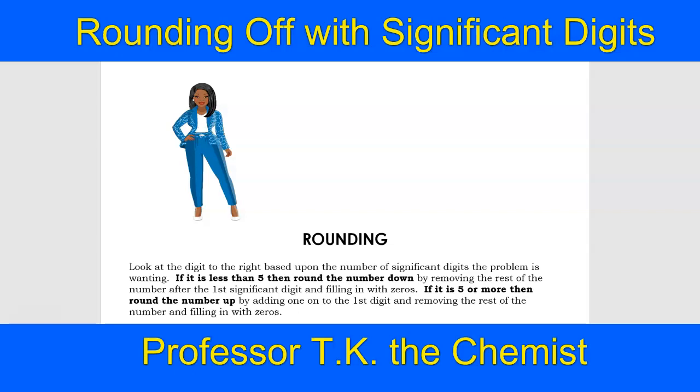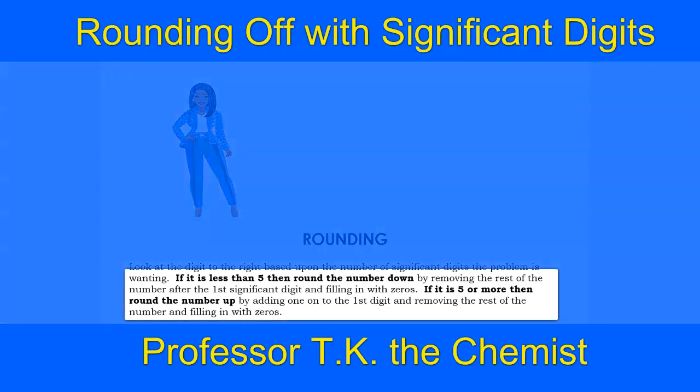If the number that you're rounding is less than five, you round down by removing the rest of the numbers after the first significant digit, and then you fill it in with zeros.